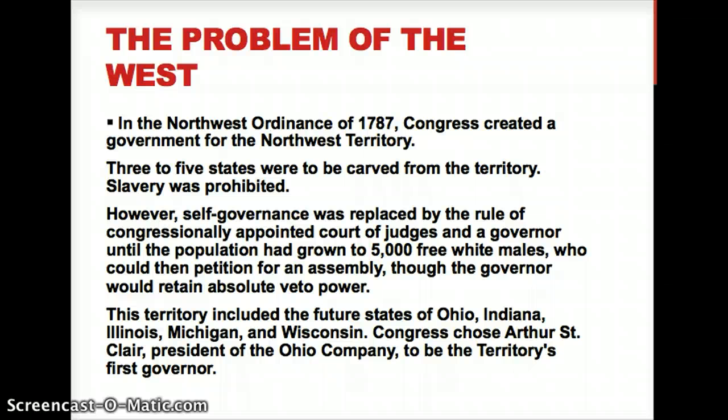The 5,000 free white men could then petition the governor appointed by Congress to create a legislative assembly that would have the power to govern itself. So basically, Congress would create a temporary government, and when enough people got there, they could petition to create their own government. This territory eventually would be divided into states such as Ohio, Indiana, Illinois, Michigan, and Wisconsin.